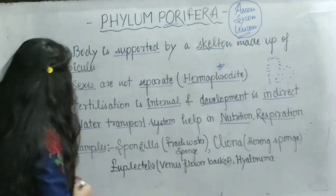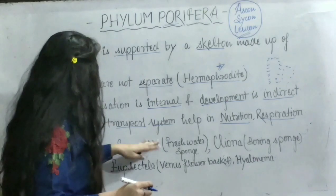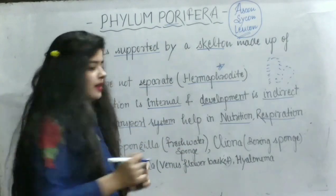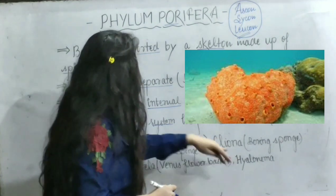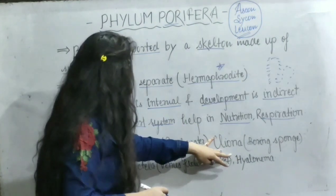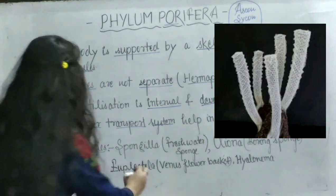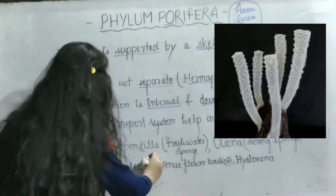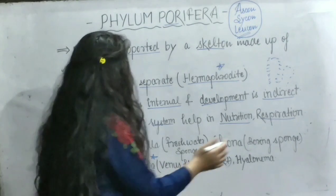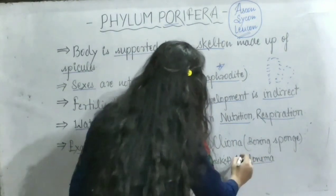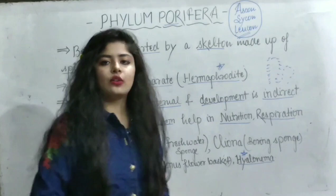Examples of Porifera: Spongilla is a freshwater sponge. Cliona is called a boring sponge. Euplectella is called Venus' flower basket, which is given to couples at marriage as a sign of togetherness. The last example is Hyalonema, whose common name is glass rope sponge.